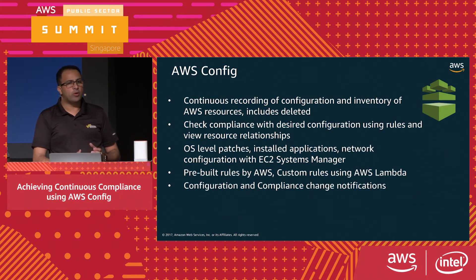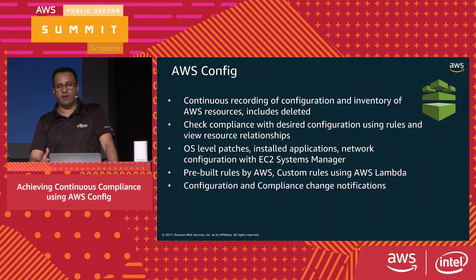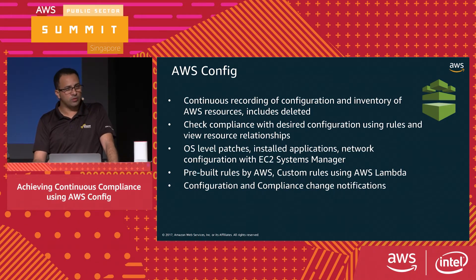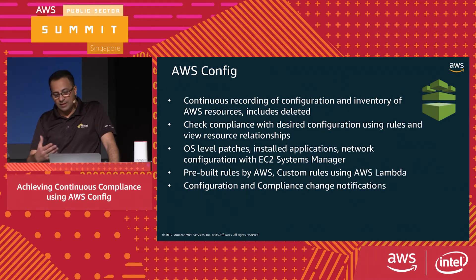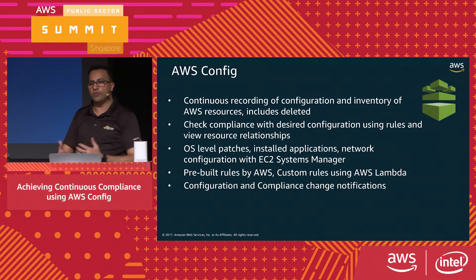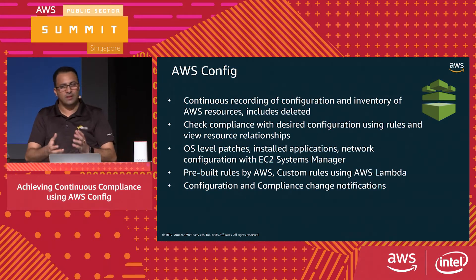A key feature of Config is config rules, which play a very important role in automating the function. Config rules come in two formats: AWS managed rules — about 70 plus ready-made rules available on the console — and custom rules you can write for specific compliance requirements. Once configured, rules are triggered either by a configuration change or on a periodic basis.